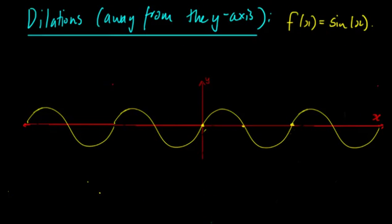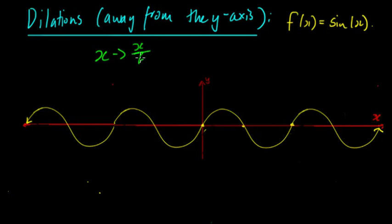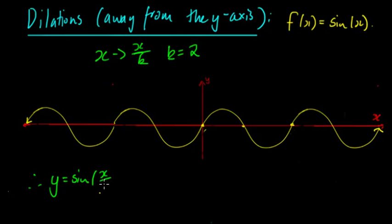Now what about dilations away from the y-axis? Here we have f(x) = sin(x). This is when we're replacing x with x/k. Let's begin when k is equal to 2 — that means we're going to get y = sin(x/2).